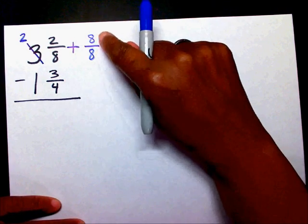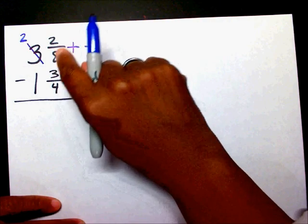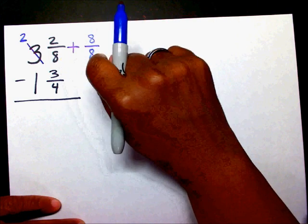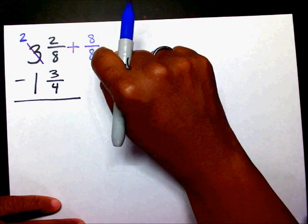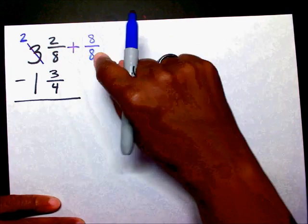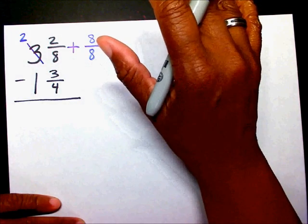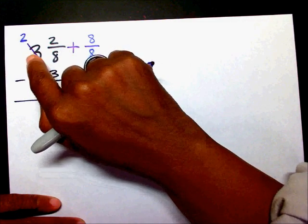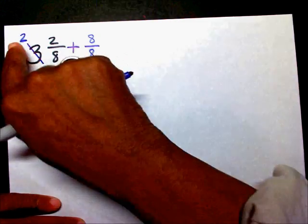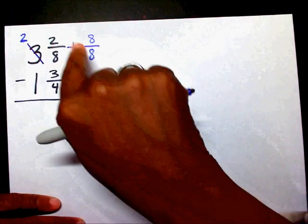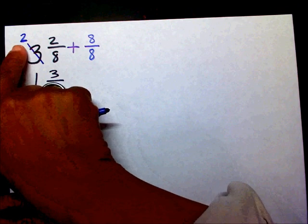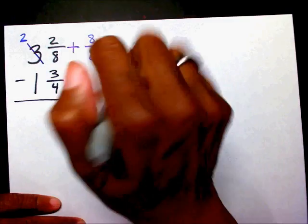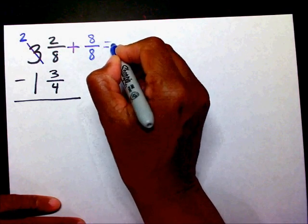The reason why I chose eight over eight is because I can just add these two fractions straight across. If I were to choose another number other than eight over eight, then I would have to get a common denominator for this fraction, and I don't want to do that — I want to make it as simple as possible. So I borrow one from the three, that leaves me with two, and two and one is still three — it just looks different.